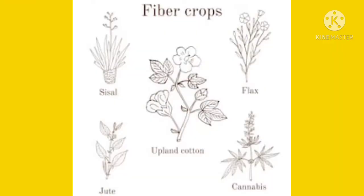If we talk about fiber crops, cotton, jute, hemp, and natural silk are the four major fiber crops grown in the world. The first three are derived from plants, whereas silk is obtained from the cocoons of the silkworm. The production of silk comes under sericulture.